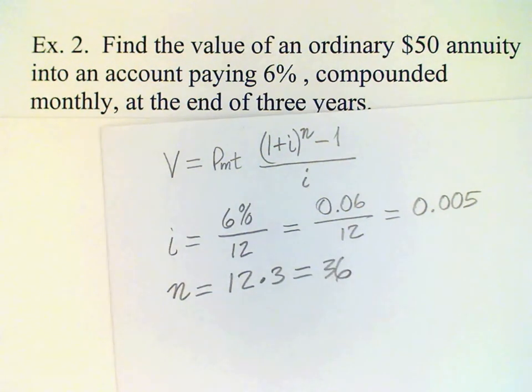So now we have a value for I, we have a value for N and we're given the payment, and so all that remains to do is just substitute into the formula.